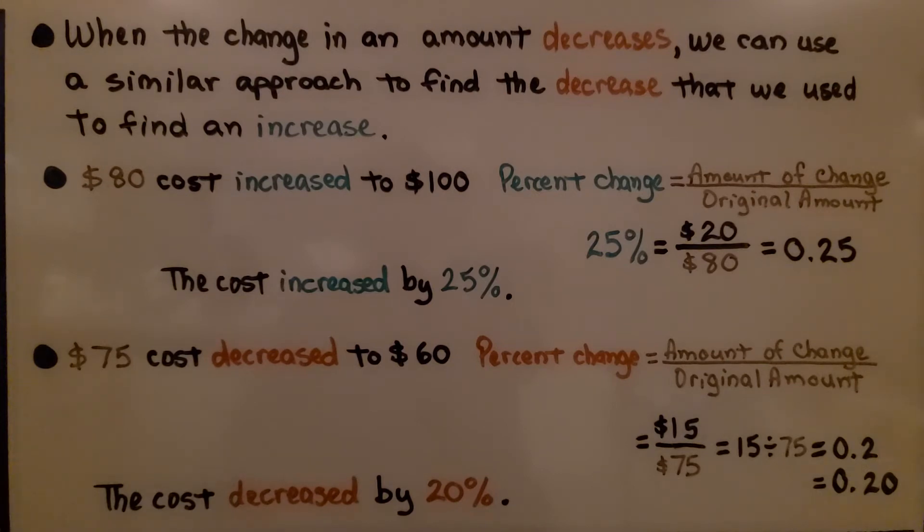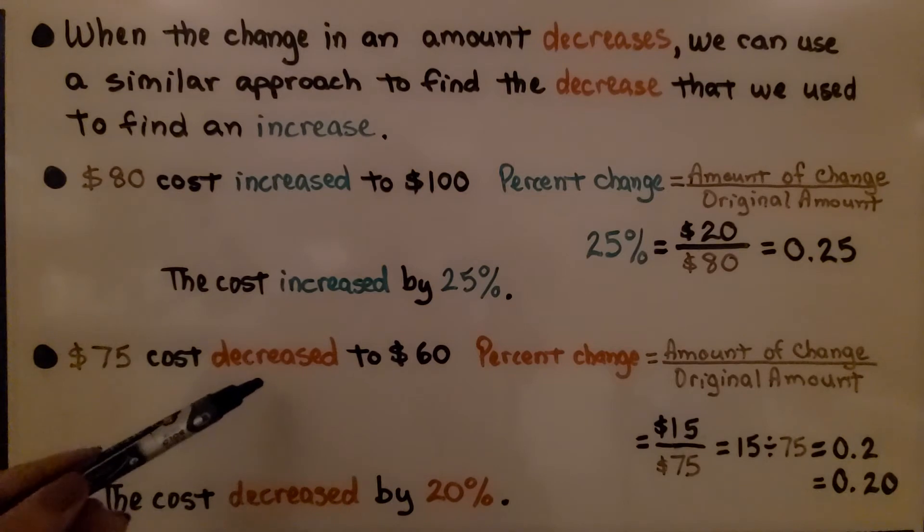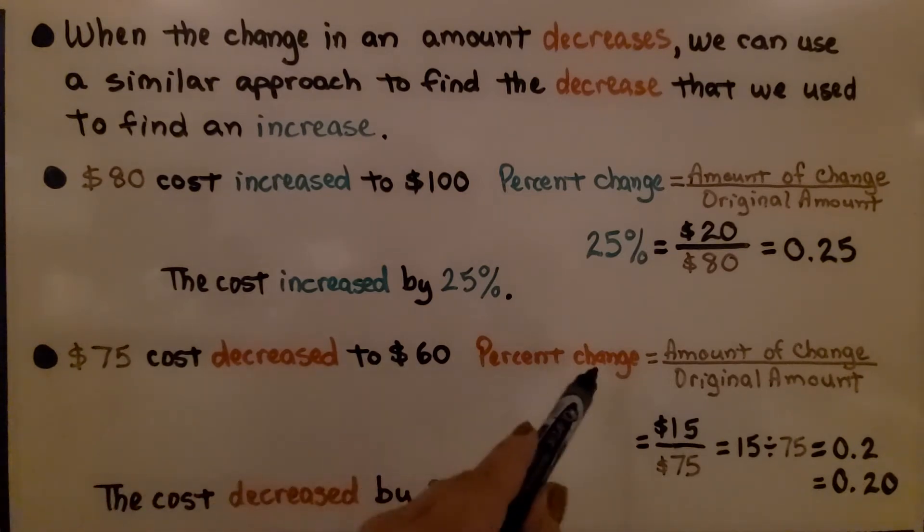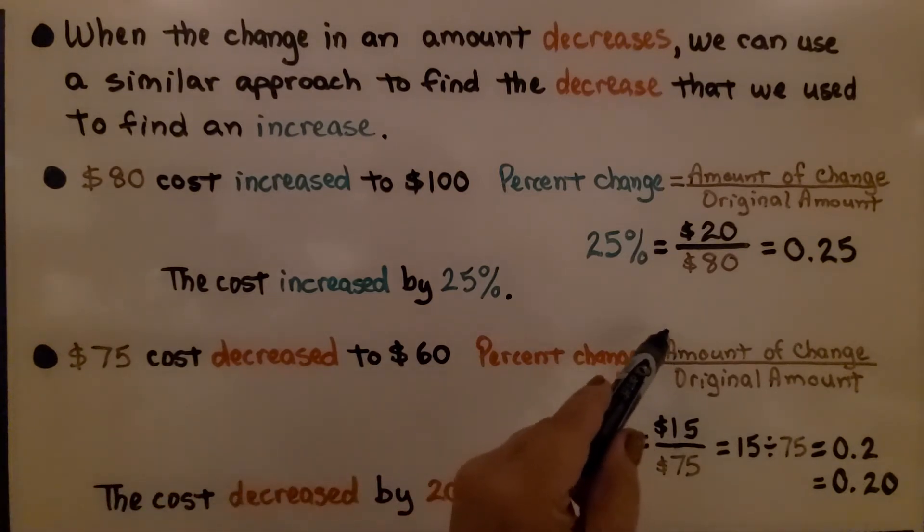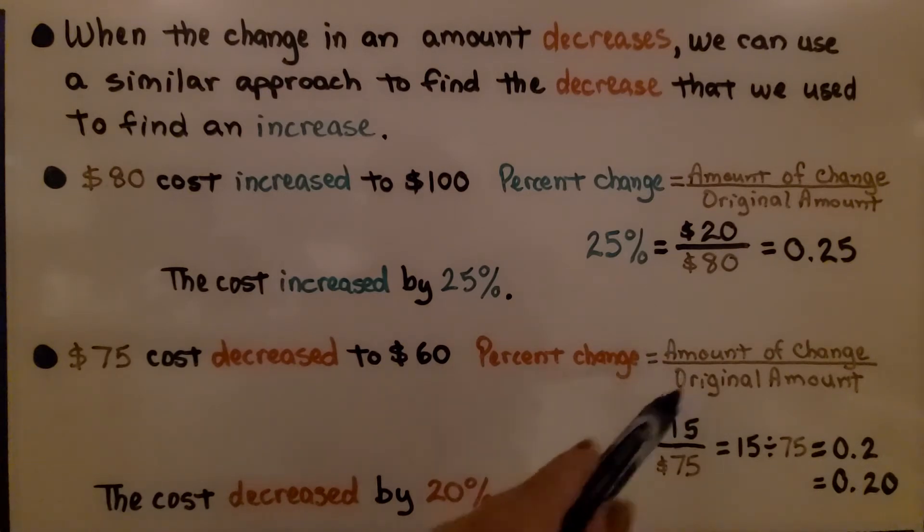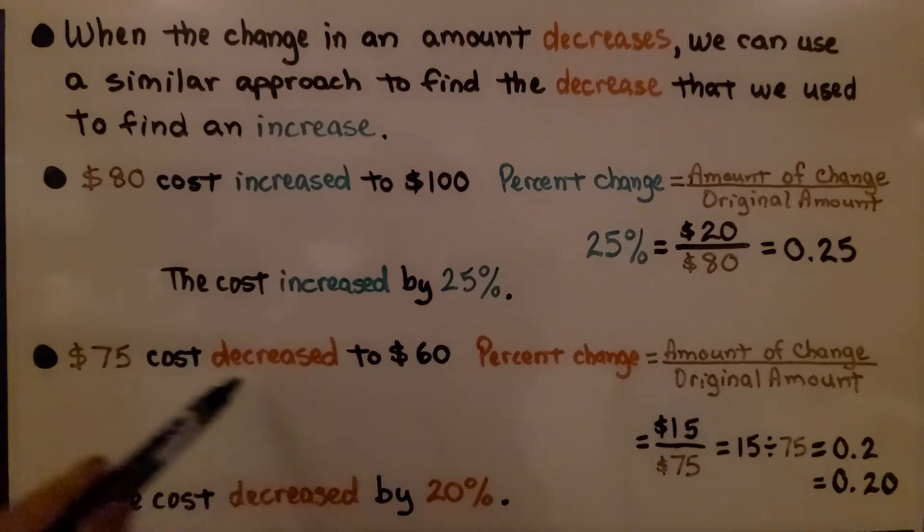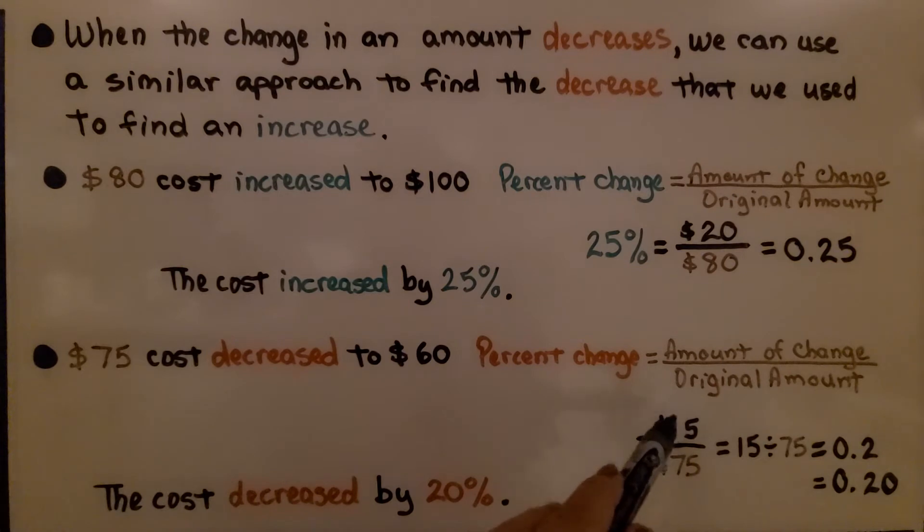If we have $75 cost decreased to $60, the percent change is the amount of change divided by the original amount. The difference between 75 and 60 is 15. We write it over the $75 original cost. That means we have 15 divided by 75.